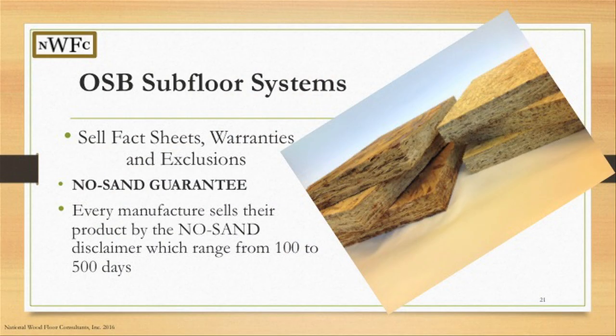Every OSB manufacturer advertises their no-sand guarantee. Look at their spec sheets on warranty and exclusions — the no-sand guarantee ranges from about 100 days to 500 days. Commodity grades are typically around 100 days; average grades come in at 200 to 300 days; high-performance grades are up at 400 to 500 days. There is a price difference, of course. And honestly, some commodity grades don't even make it 100 days before you still see edge swell.